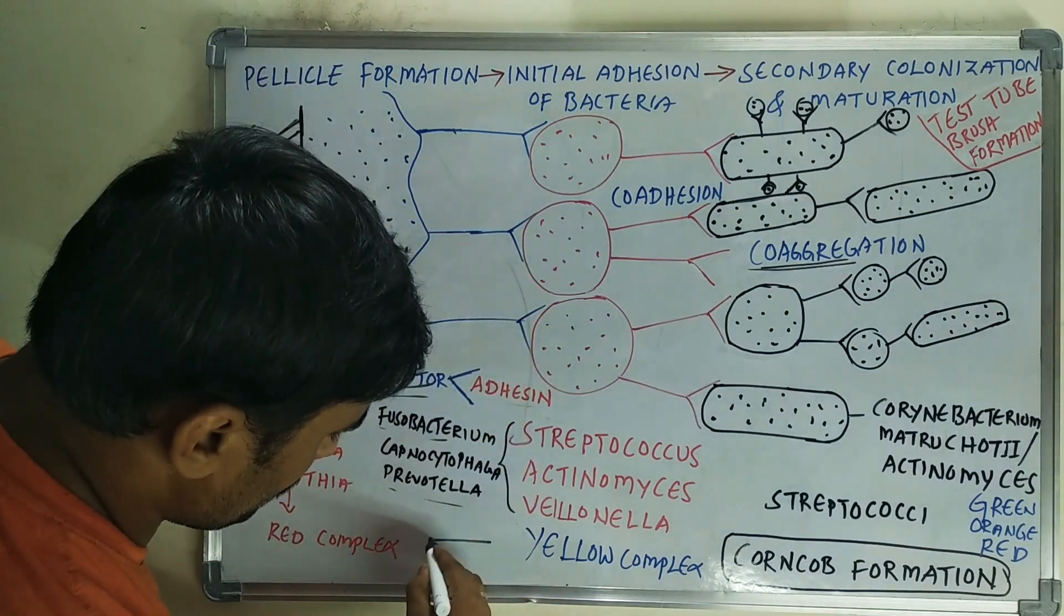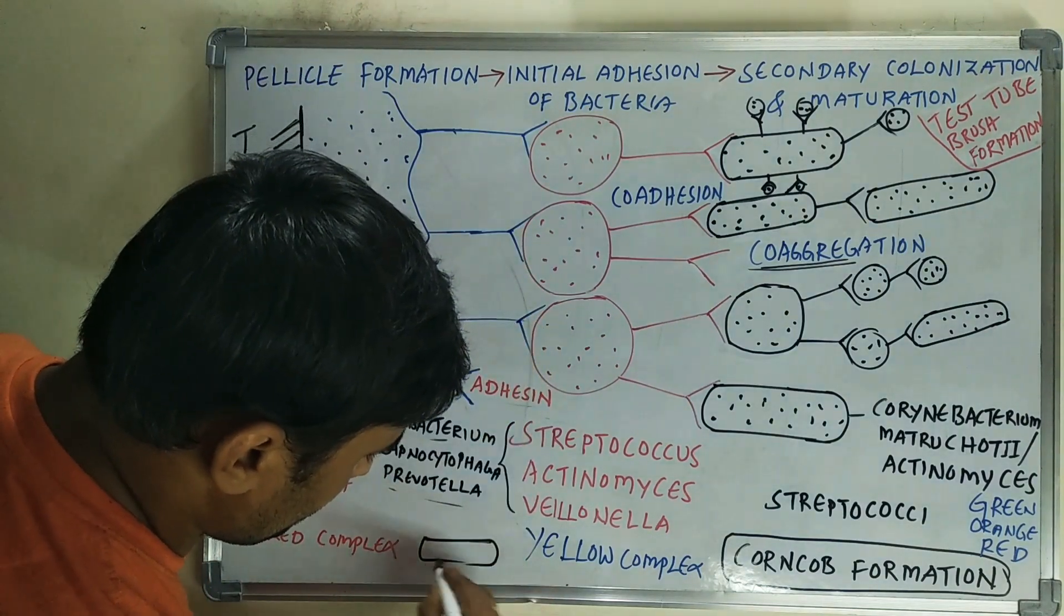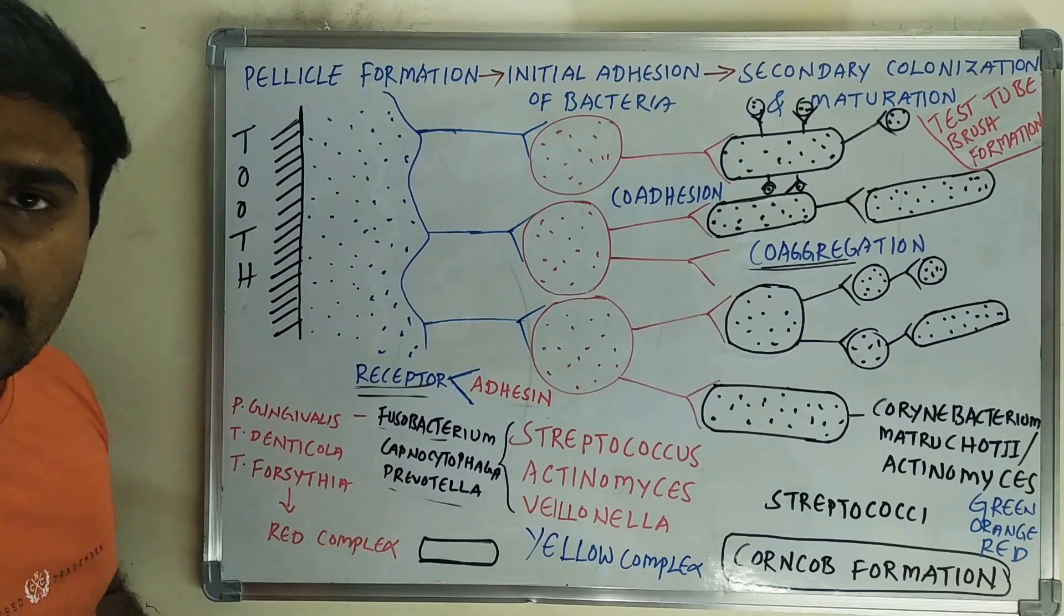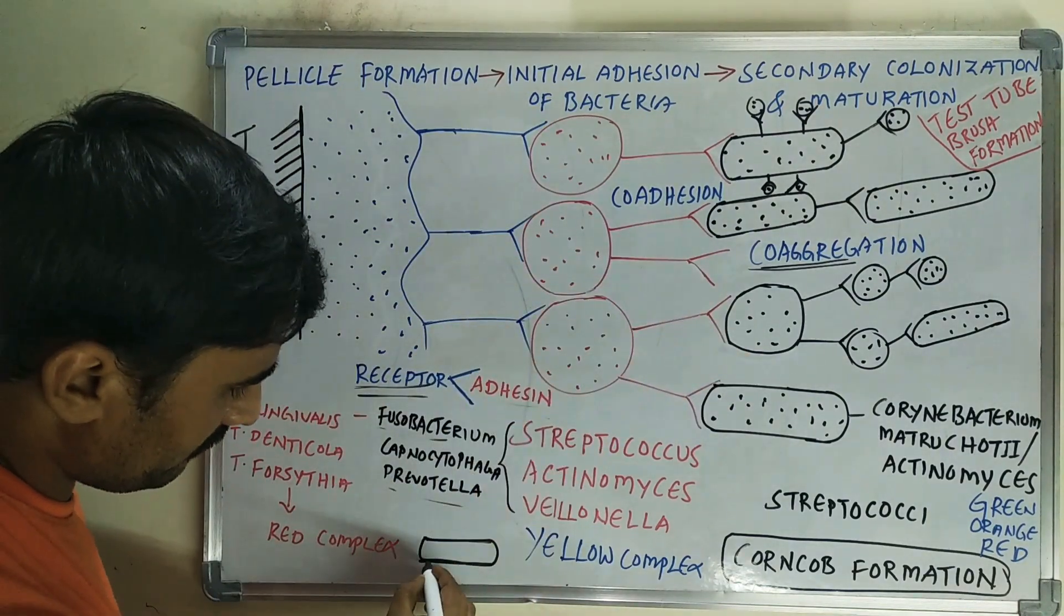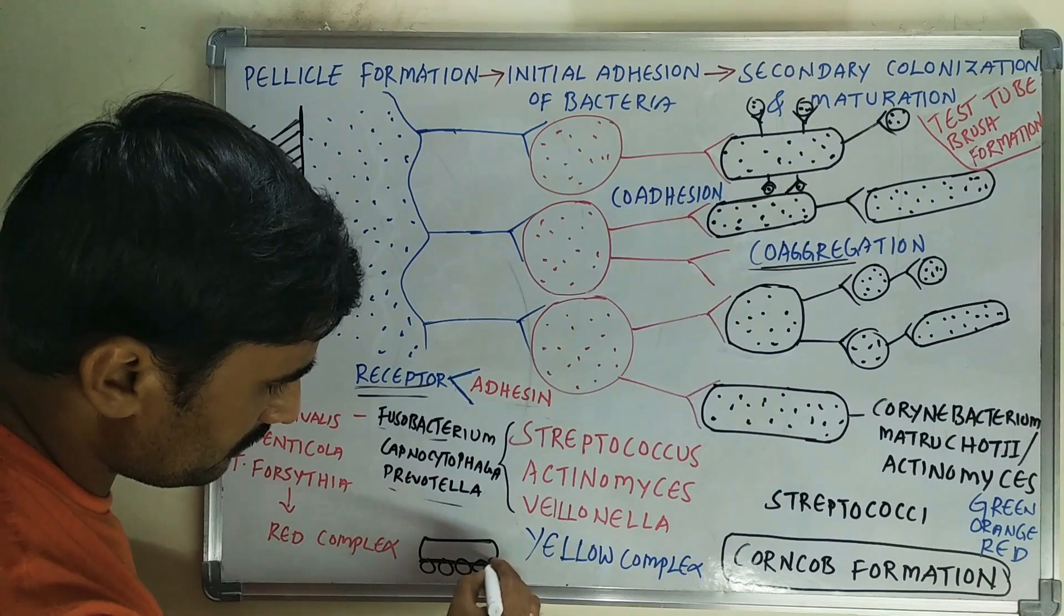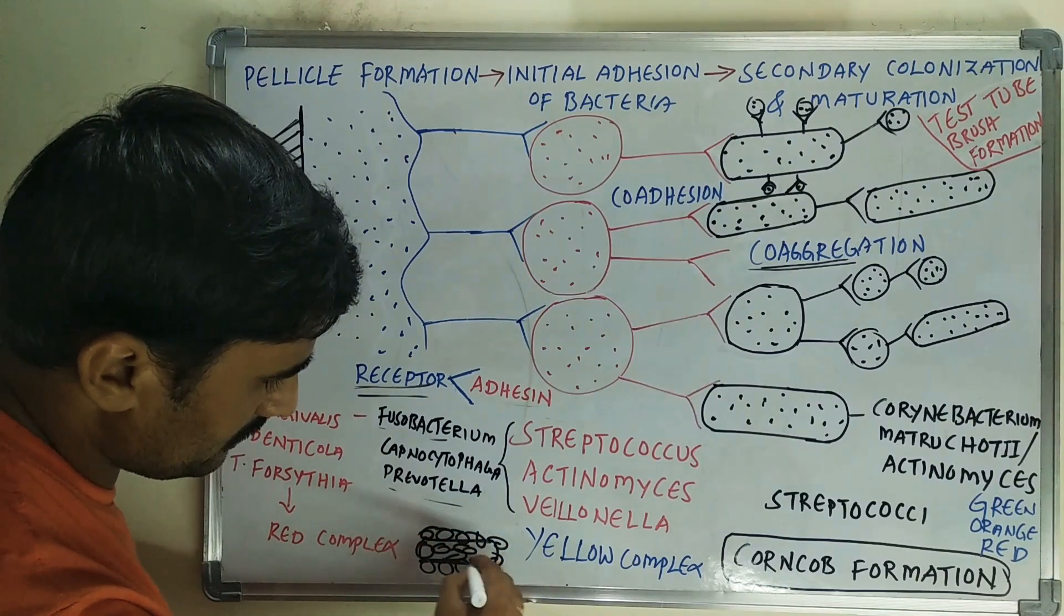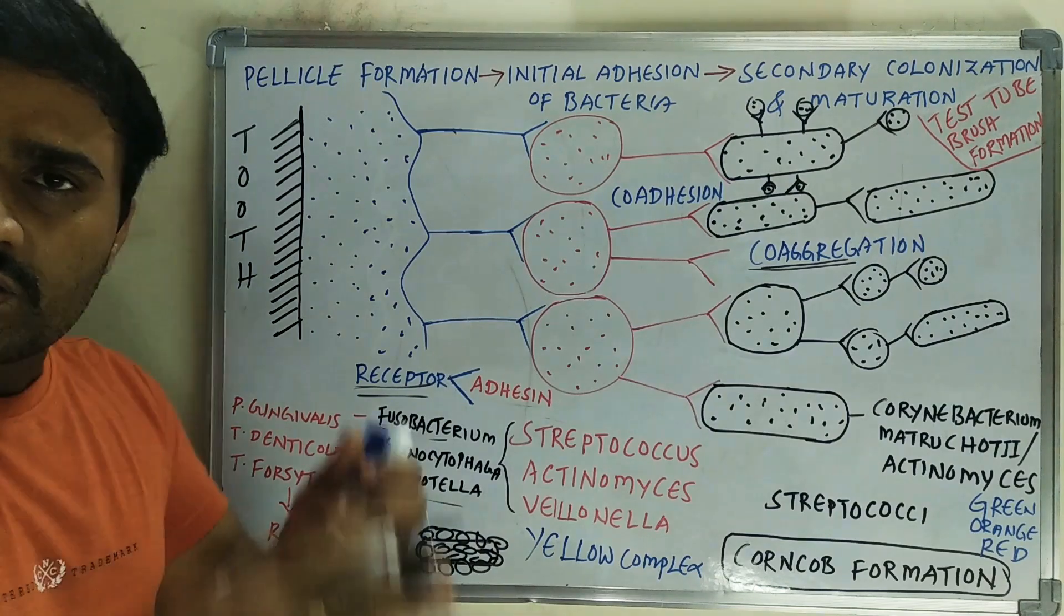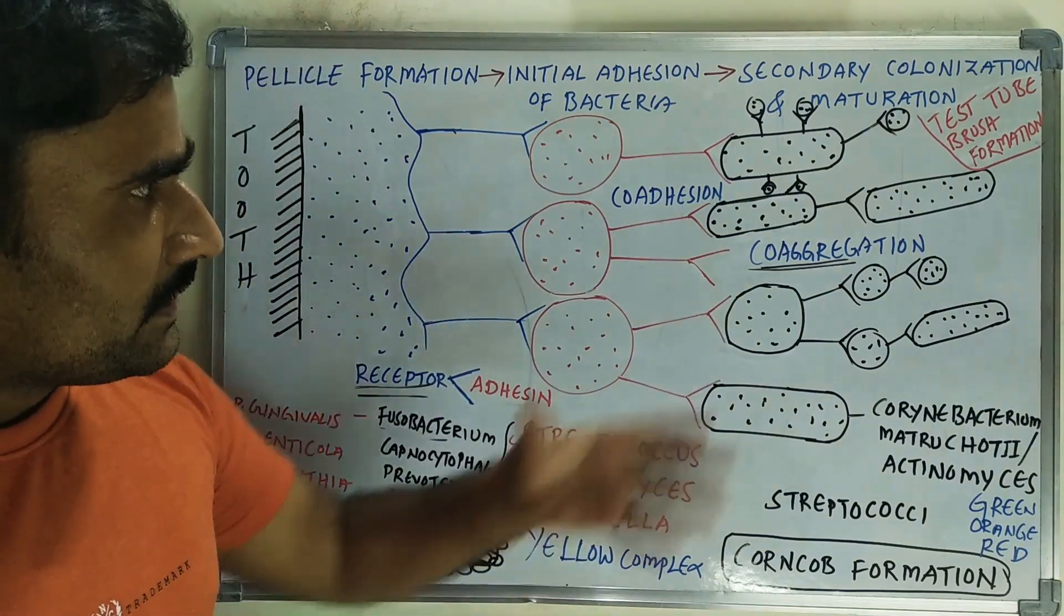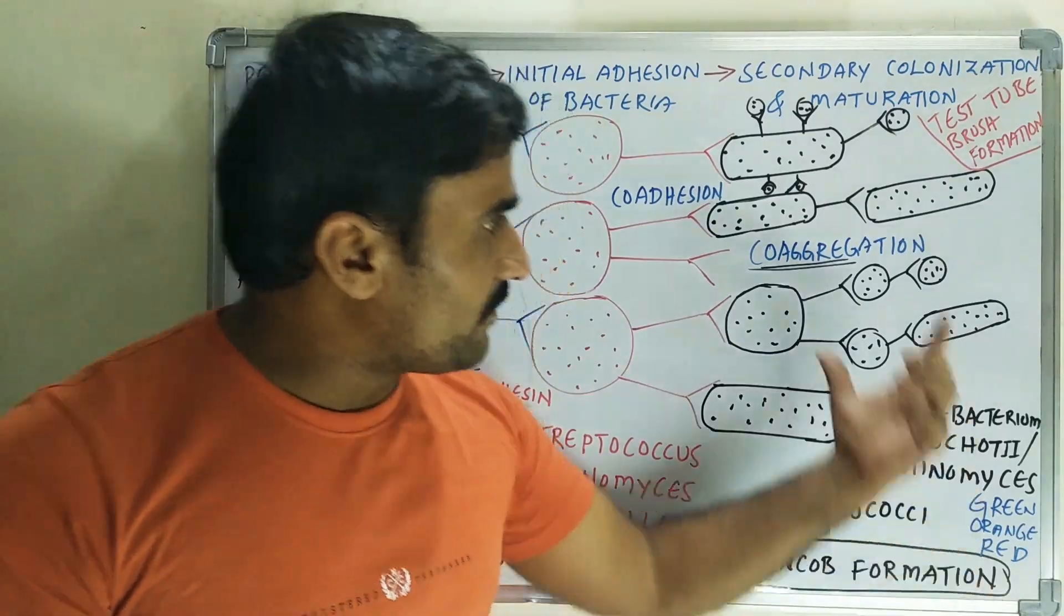If you see maize cobs, in the center there is wood and the maize grains will attach around this. In the same way, in the corncob formation of co-aggregation.